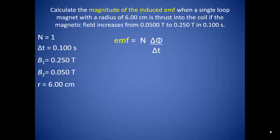Calculate the magnitude of the induced EMF when a single-loop magnet with a radius of 6 cm is thrust into the coil, if the magnetic field increases from 0.05 T to 0.25 T in 0.100 seconds. We know there is one loop of wire, the beginning and ending magnetic field strength, and the time it takes to change the magnetic field. To find the electromotive force, we need N, the change in magnetic flux, and the change in time. Magnetic flux is found by taking the magnetic field times the area times the cosine of the angle theta.